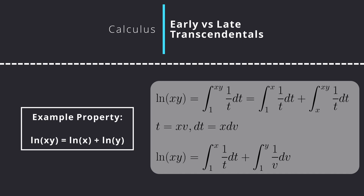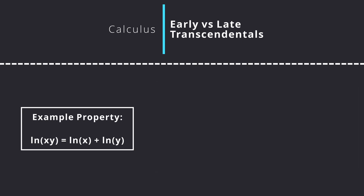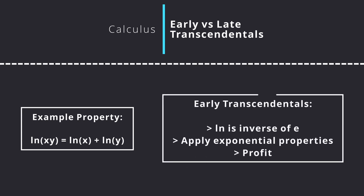It's a rather simple result to prove, but when compared to the early transcendentals version, it seems incredibly convoluted. It's natural to follow from the definition of ln x in early transcendentals as the inverse of e to the x, and as such we can use exponential properties to directly prove the logarithmic properties, as the exponential properties arise naturally from the axioms of real numbers.